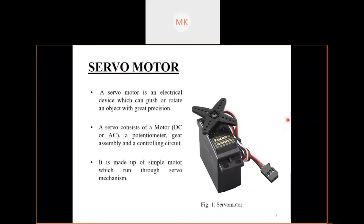A servo motor can be AC or DC. It basically has four parts: motor, reduction gearbox, encoder or potentiometer, and a control circuit. Through a microcontroller, we give a signal to the control circuit in the form of PWM, which stands for pulse width modulation. The control circuit decodes the PWM signal and decides through how much angle we have to rotate the motor.